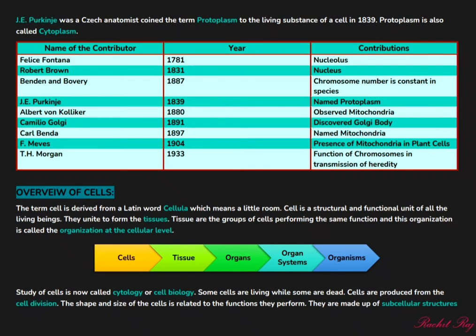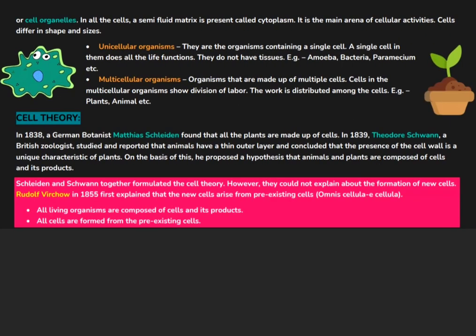This formation of tissues, organs, etc., does not hold true in the scenario of a unicellular organism — we will discuss that later. The study of cells is termed as cytology, or cell biology. Some cells are living while some are dead. The point to be noted is that living organisms can also have dead cells. The shape and size of cells depend upon the functions they are supposed to perform. Cells are made up of sub-cellular structures, which we can also call cell organelles. Cells also have a semi-fluid matrix called cytoplasm, which is the main area of cellular activities and reactions.